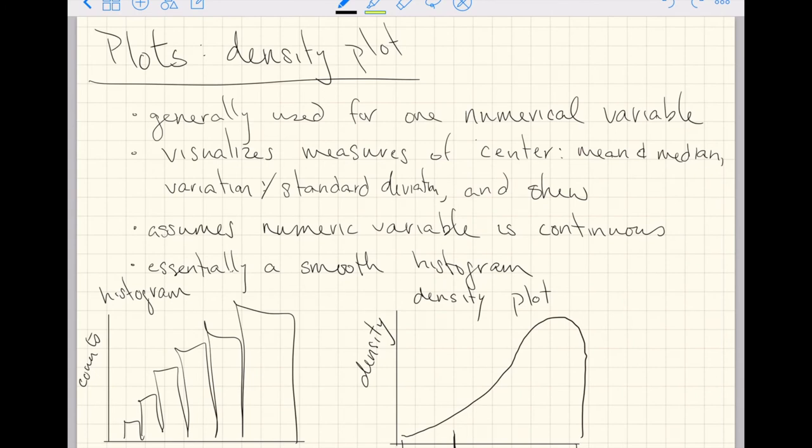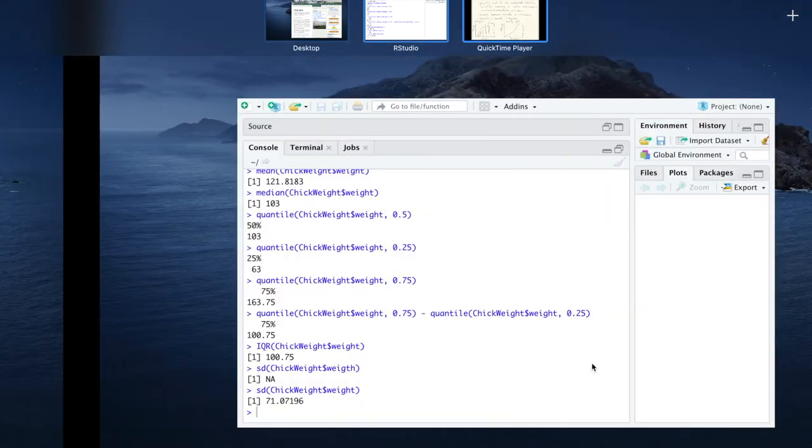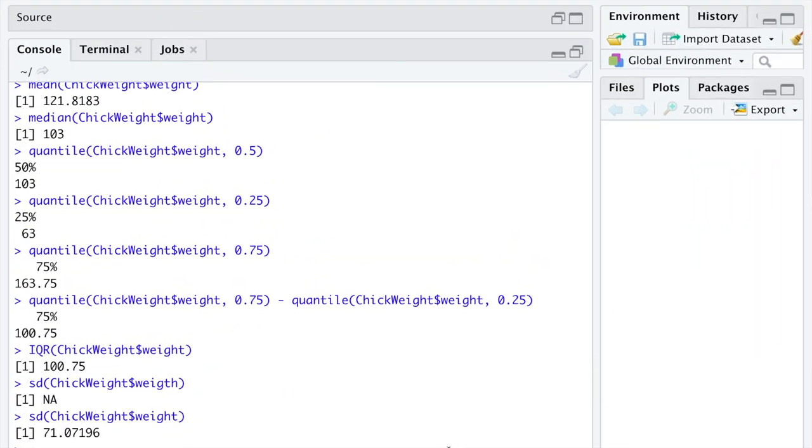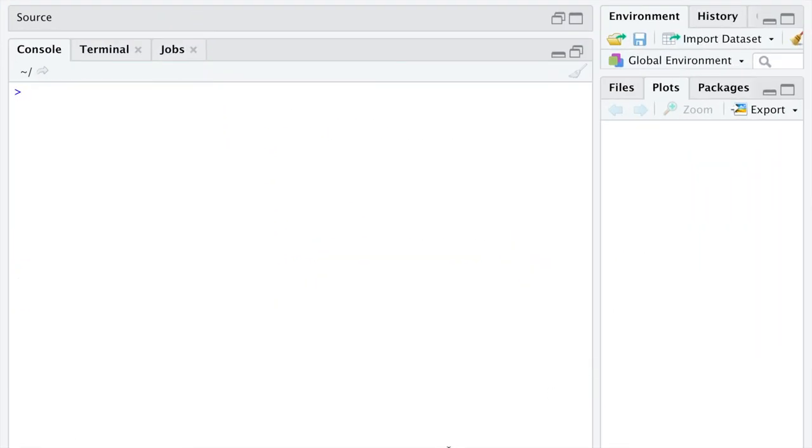That was a good rehearsal of the mean, median, and the relationship based on the skew of the plot. Now let's jump into R and pull up a density plot. Let's develop the code for a density plot.